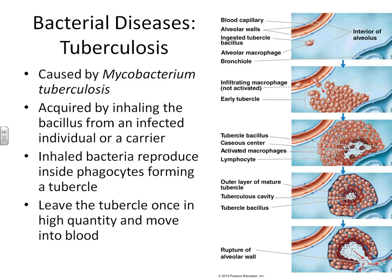Some people inhale the bacillus-shaped Mycobacterium tuberculosis and become infected. In the alveoli — the very bottom portion of the lungs where gas exchange occurs — your macrophages ingest the bacteria. However, this bacteria can survive inside your macrophages. Once inside a macrophage, the bacteria can't be killed, but the macrophage begins to send out a chemotactic signal to call for help.